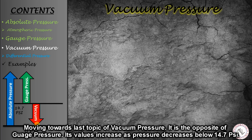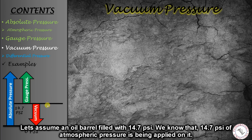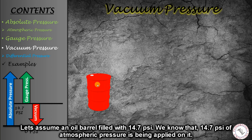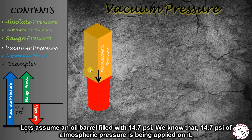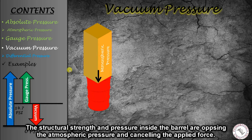To understand vacuum pressure, consider the example of an oil barrel. We assume this oil barrel is on the surface of the Earth, where atmospheric pressure of 14.7 psi is continuously applied as a force on it. The barrel resists this because of two things: its structural strength, and the air inside it which is also at 14.7 psi, so the forces cancel out.